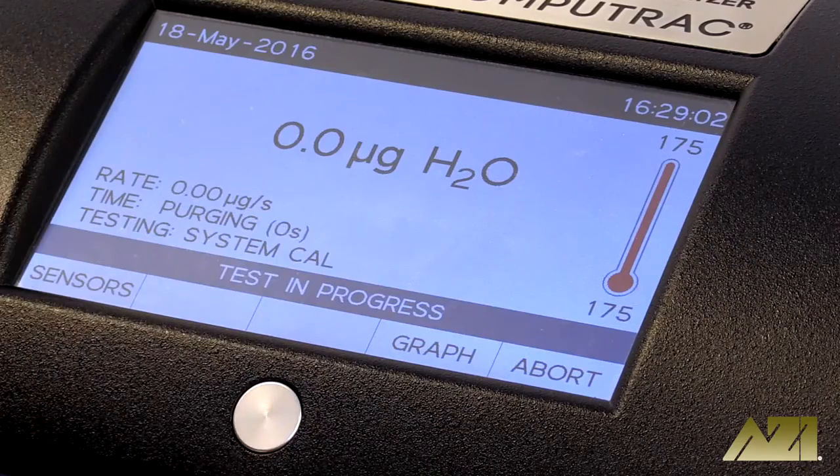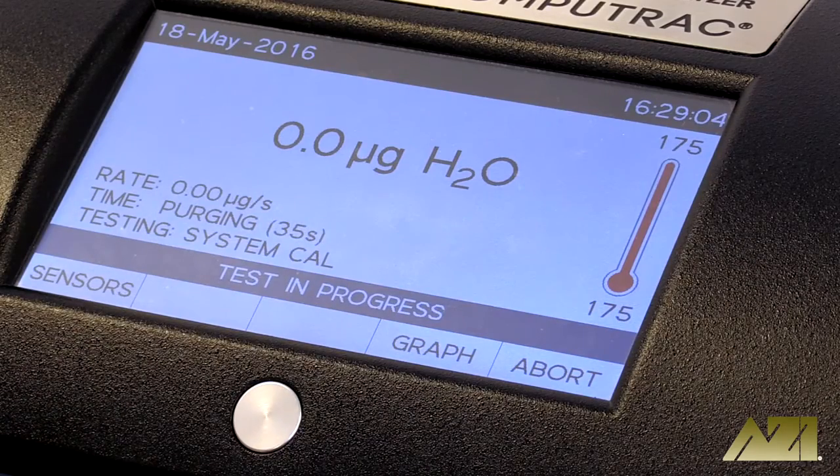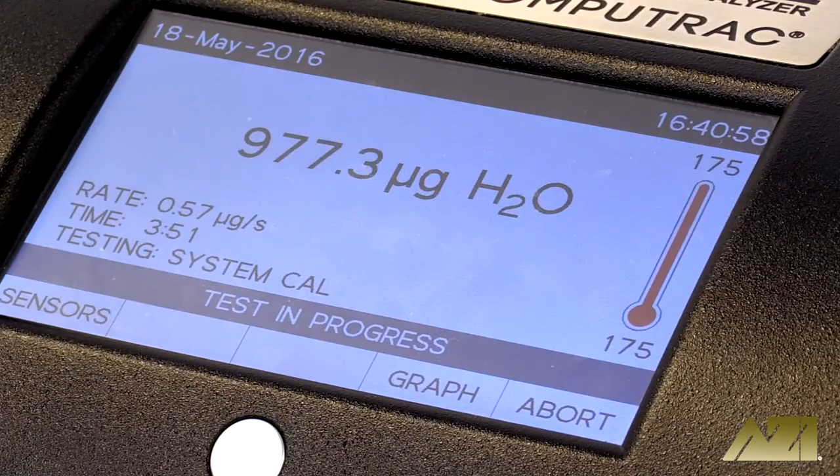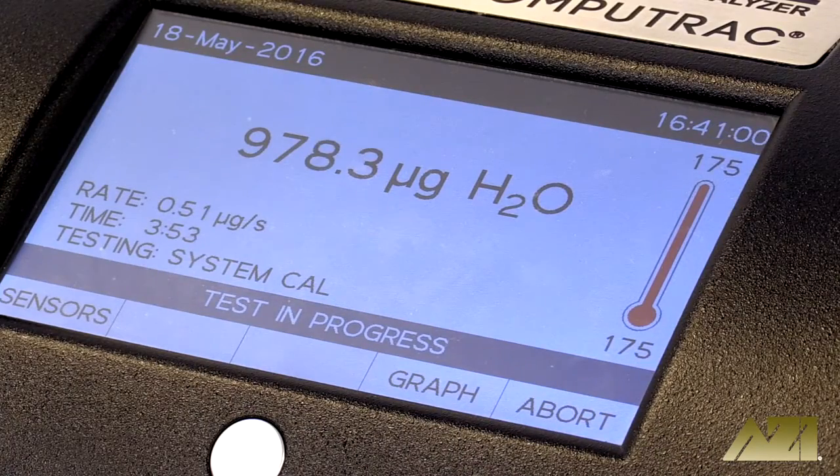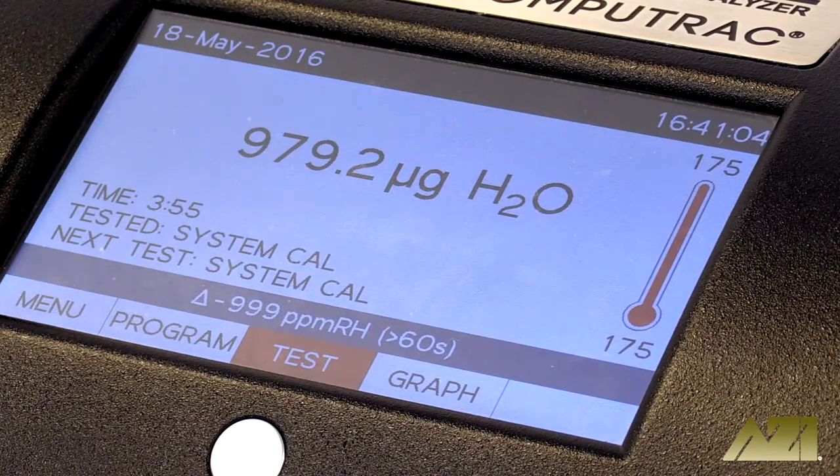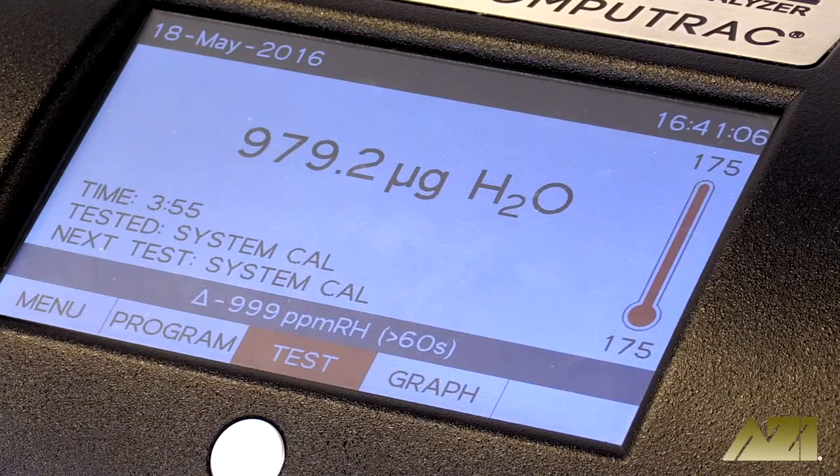Testing times range from three to seven minutes for each one microliter microcap. Once you have three test results that are within 50 micrograms of each other and fall within the range of 950 micrograms to 1050 micrograms, you can perform statistical analysis on the results.